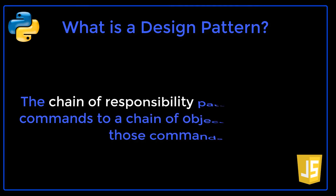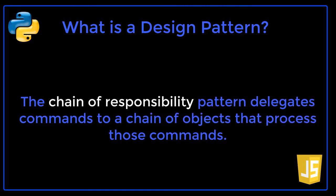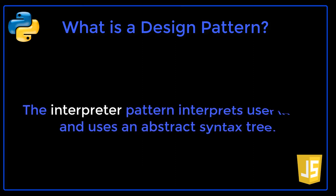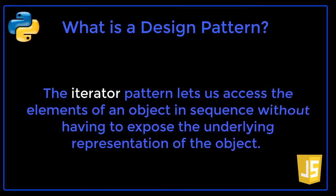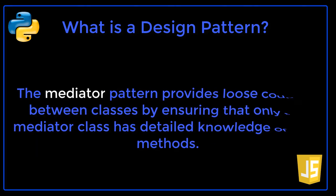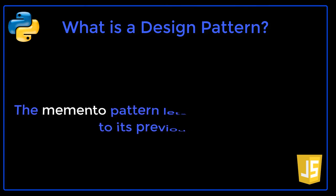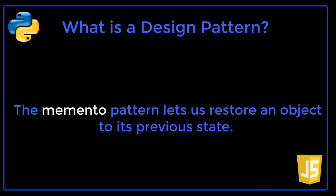The Chain of Responsibility pattern delegates commands to a chain of objects that processes those commands. The Command pattern creates objects that encapsulate actions and parameters. The Interpreter pattern interprets user input and uses an abstract syntax tree. The Iterator pattern lets us access the elements of an object in sequence without having to expose the underlying representation of the object. The Mediator pattern provides loose coupling between classes by ensuring that only the Mediator class has detailed knowledge of their methods. The Memento pattern lets us restore an object to its previous state.